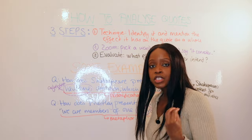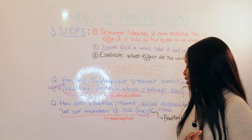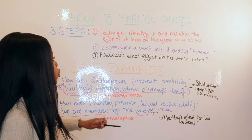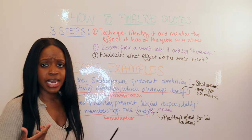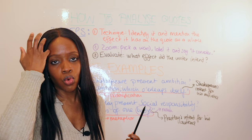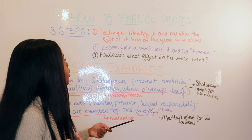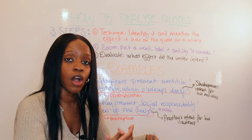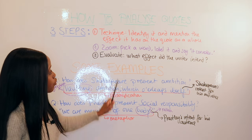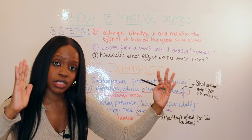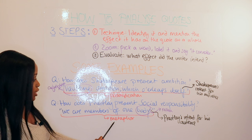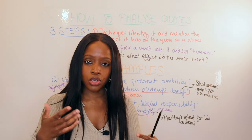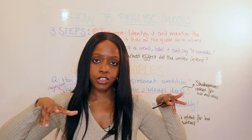The second example is from An Inspector Calls by Priestley. The question is: how does Priestley present social responsibility? The quotation is uttered by Inspector Goole: 'We are members of one body.' When writing about social responsibility — the idea that we need to look after each other, especially those weaker or poorer than us — I begin by mentioning the technique: in this case, a metaphor. What I mention is that the playwright is conveying to his audience that we all have some duty to look after each other.